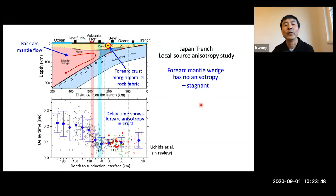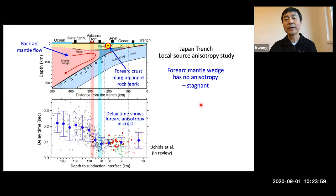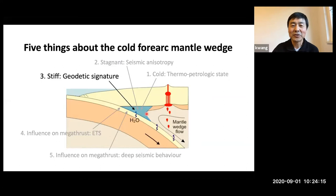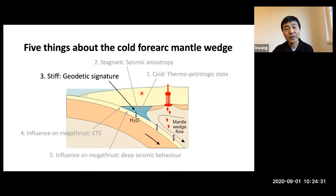That was the second aspect of the cold forearc mantle wedge. Now let's move to the third: its mechanical properties. Because the forearc mantle wedge is cold compared to the very hot back-arc and arc mantle wedge, we expect it to be mechanically stiff. It is quite amazing that recently we're able to see this from post-seismic deformation — it leaves a very strong, obvious geodetic signature.